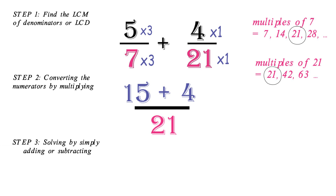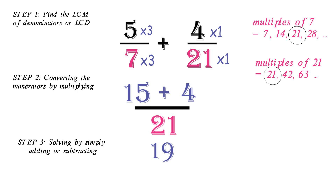Step 3: solving by simply adding or subtracting. We can now add the numerators: 15 plus 4 to get 19. Our final answer is therefore 19 over 21.